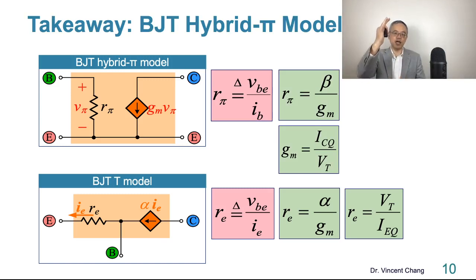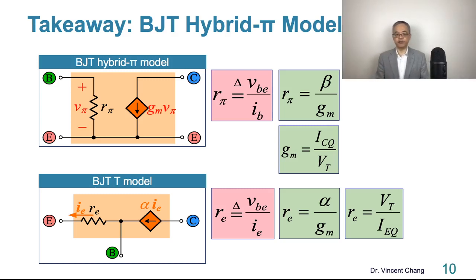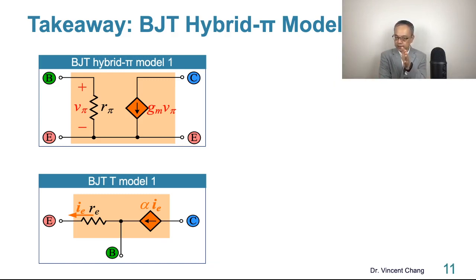Here's the takeaway. The whole picture of the hybrid pi model versus the T-model. All information are listed here. But before we close, I also want to highlight. This is just the first version. You can have an alternative version. The first version, I just named it model one. The T-model one on the bottom, hybrid pi model one on the top.